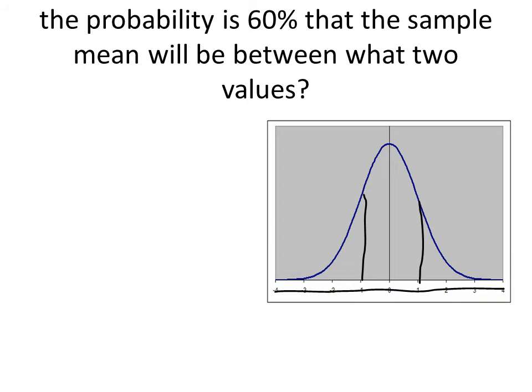The probability is 60% that the sample mean will be between what two values. That's a different problem that we've been studying so far. They're giving us the probability. They want us to find the X values that will give us a 60% probability of being in this area of the curve. If that area is 60%, what do you think this area here is and this area here is? Well, the whole thing has to add up to 100%, and we want it to be symmetric, so this would have to be 20%, and that would have to be 20%.